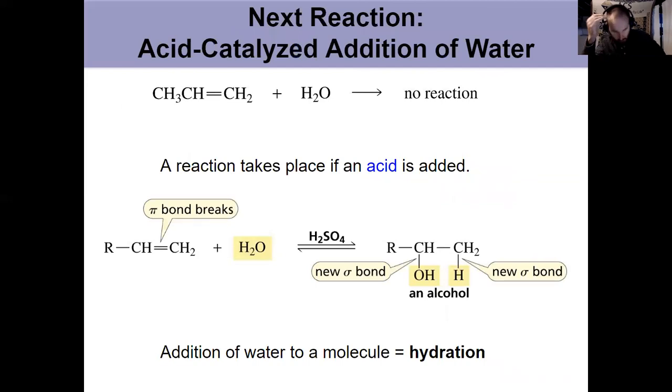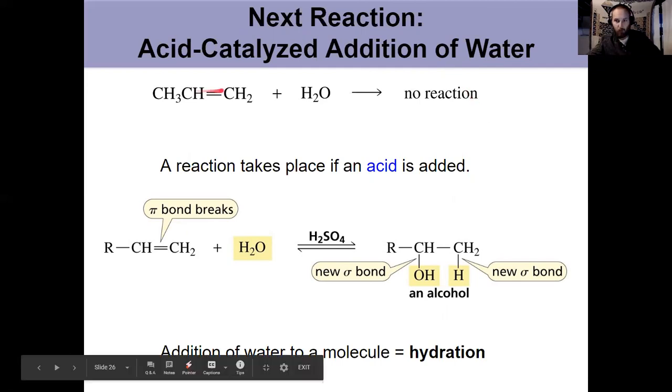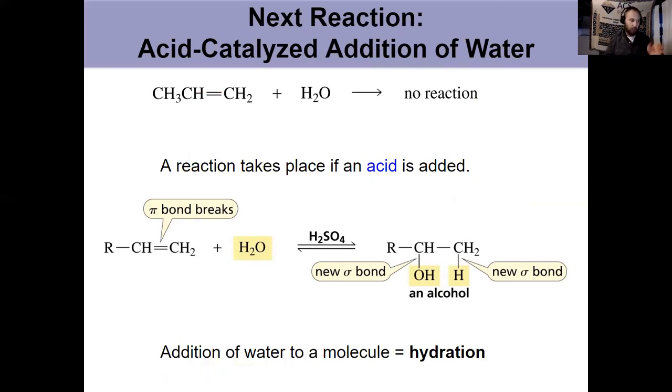So now we get reaction number two from chapter six. The acid catalyzed addition of water. And the key thing here is acid catalyzed. Because if you just take an alkene and add it with water on its own, notice from the top here, there's no reaction. Because there's no electrophile. The alkene is a nucleophile. That's present to start the reaction. Nothing that's going to react and add to the alkene. No electrophile. Water is too weakly acidic to be considered electrophilic. If anything, the oxygen on water is nucleophilic. So two nucleophiles coming together. No reaction.